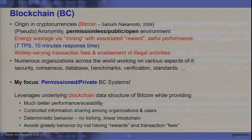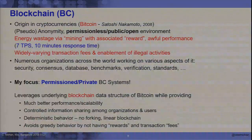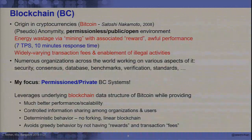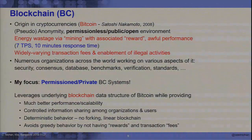A lot of strange things happen in the system because they don't know the real-world identities of the parties, who can at will come and go. At any given time you have no clue how many people are there — from a systems perspective, providing scalability and performance is a nightmare. Because you don't know anything about the trustworthiness of individuals involved, they go to extremes trying to protect against all sorts of collusion, which supposedly means somebody rewriting history.